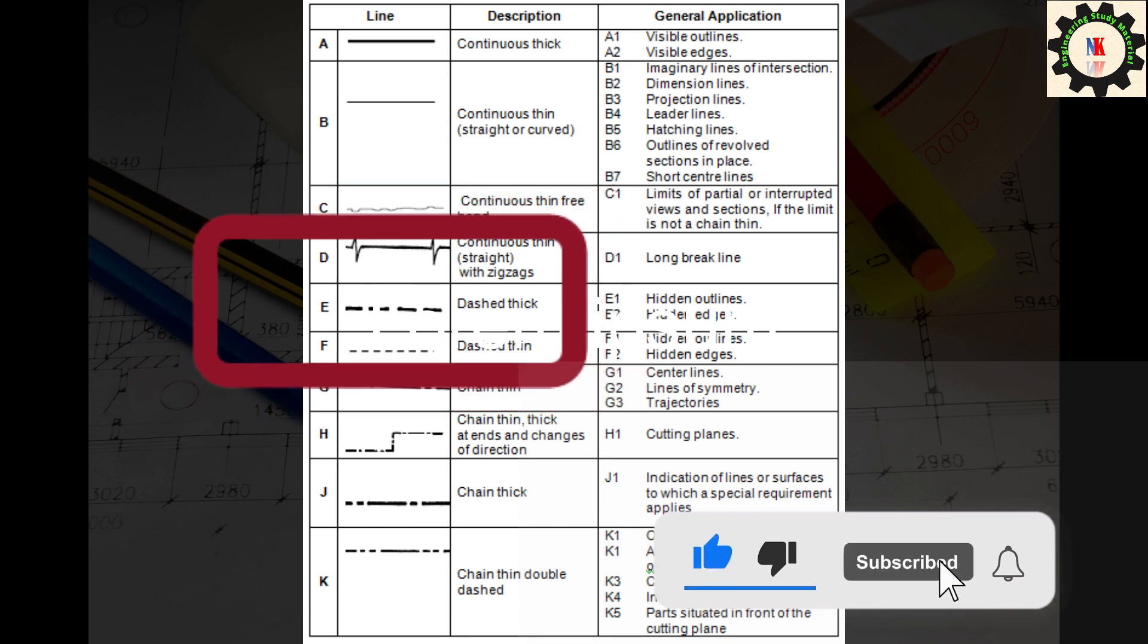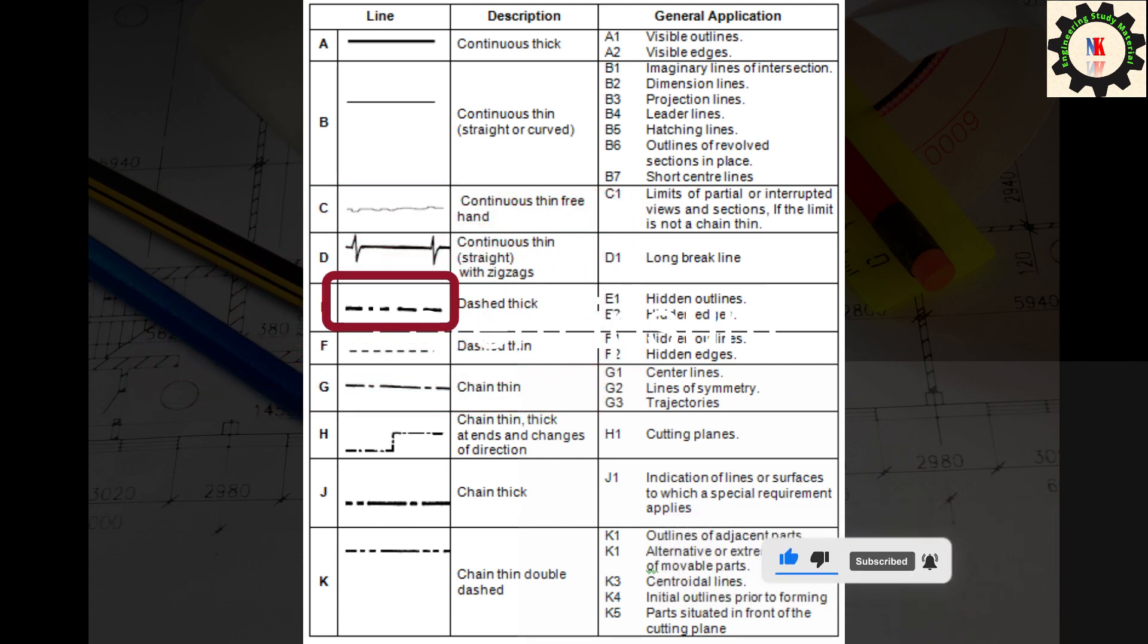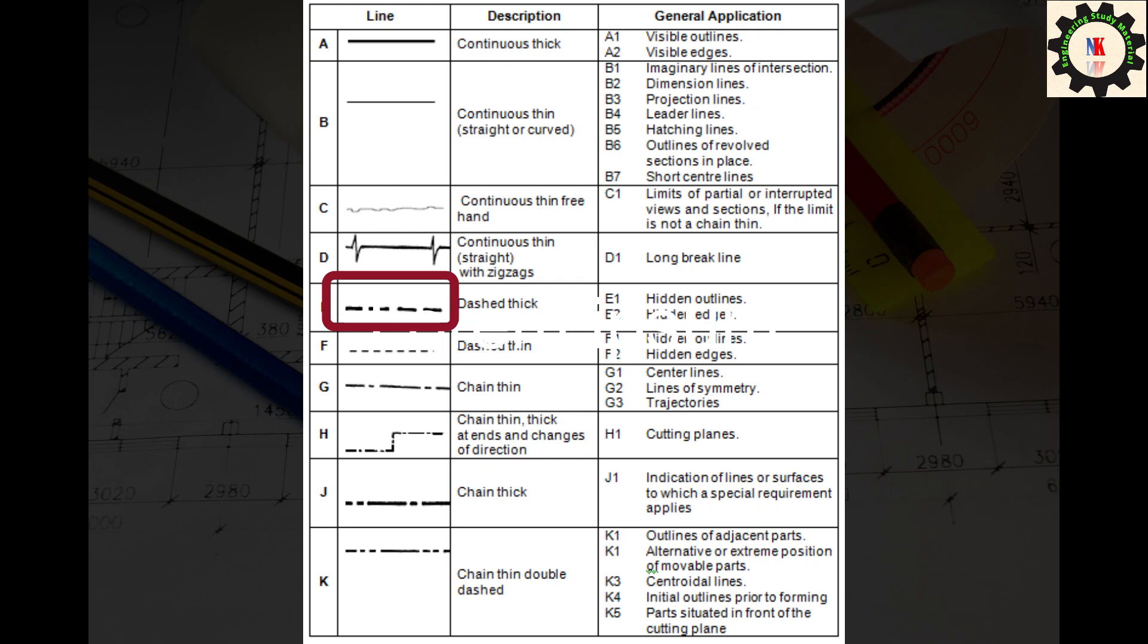These lines contain short tiny, thin dashes within it. Short thin dash lines are used for representing hidden details and edges on an object, and representing hidden outlines.